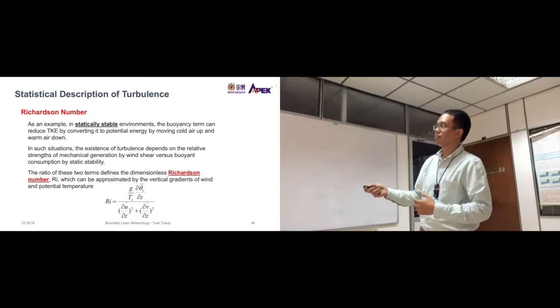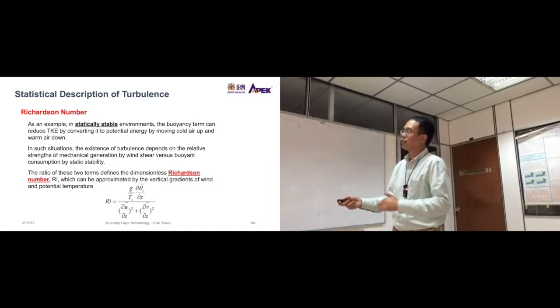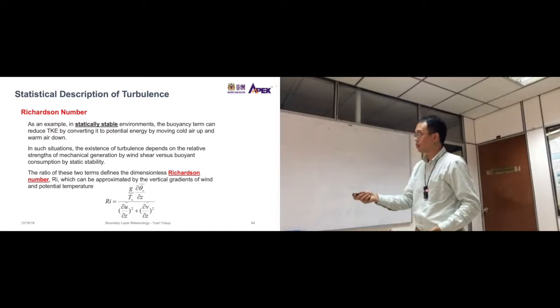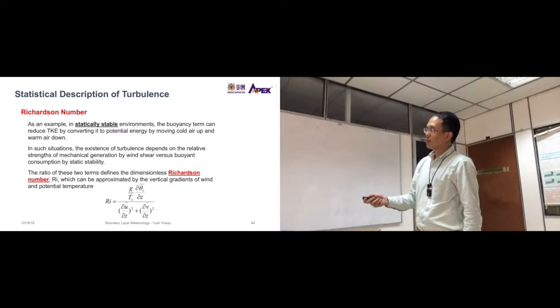So the ratio of these two terms defines the dimensionless Richardson numbers. So basically the buoyancy term divided by the mechanical term. And the ratio between these two terms is the Richardson number. So Richardson Ri number, which can be approximated by the vertical gradients of wind and potential temperatures. So let's try to break down this equation.